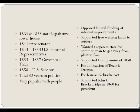In 1834 and 1838, he was elected to the state legislature in the lower house. In 1841, he served as a Tennessee state senator. From 1843 to 1853—ten years—he served in the House of Representatives in D.C. as a representative from Tennessee. He lost his seat due to redistricting, and in 1853 he ran for governor, winning two terms as governor of Tennessee.